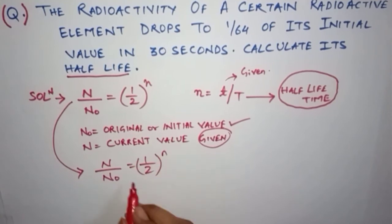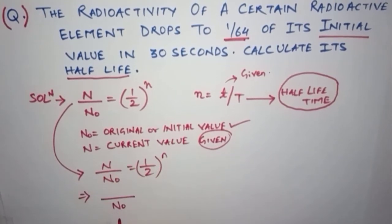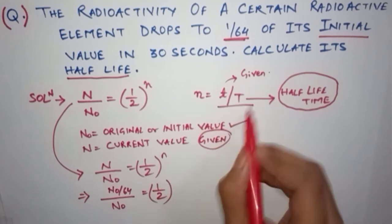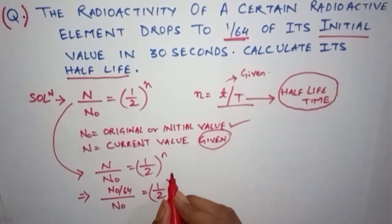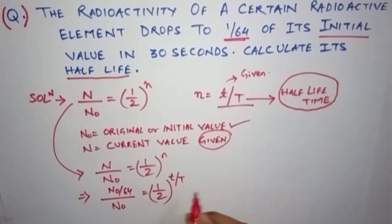Now simply we will write the formula and put the values given in the question. First we will write N₀ as N₀ and capital N we will write as N₀/64, because it is given it is reduced to 1/64 of the initial. I hope you have understood. And in place of small n we will write small t by capital T.